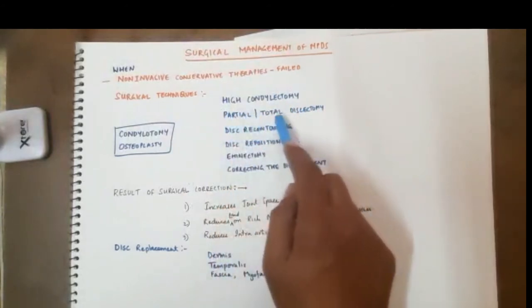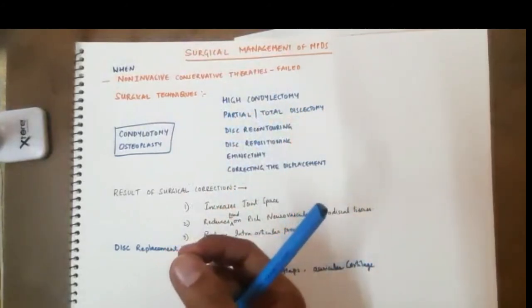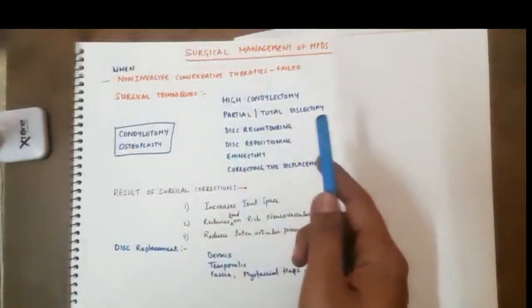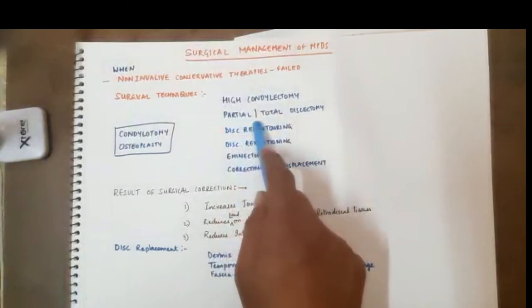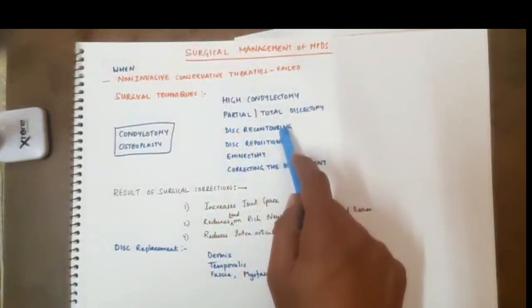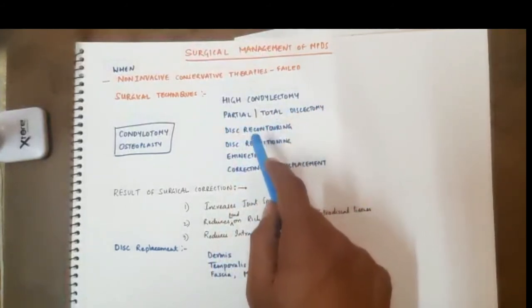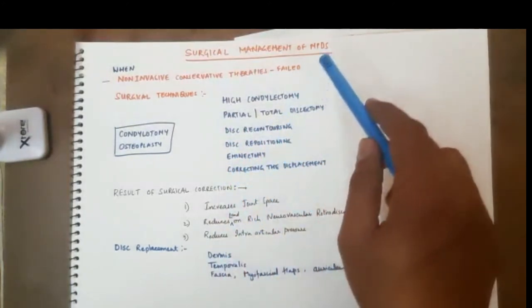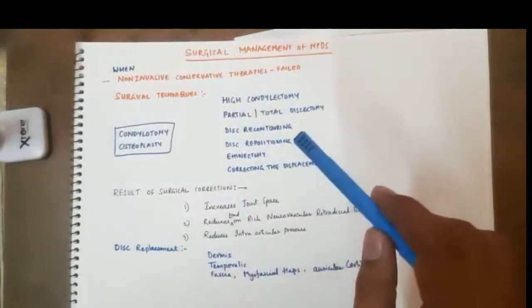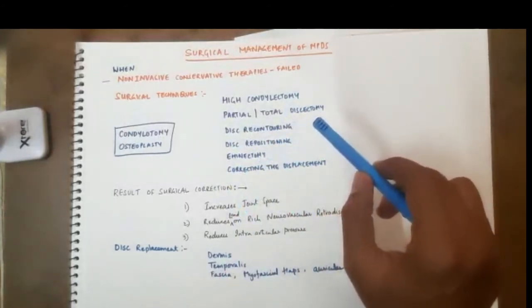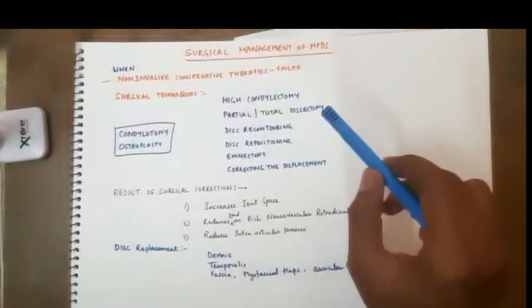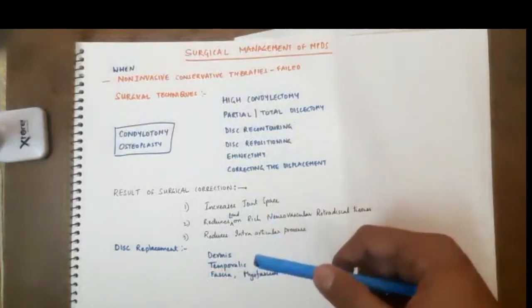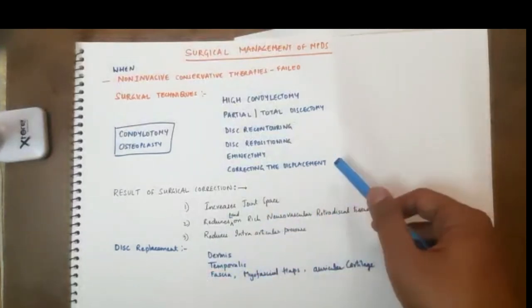The other surgical procedure is discectomy. The disc that is coming forward and giving click sounds, going backwards, getting stuck there. So in that condition you can always do partial or total discectomy. Then the disc recontouring, disc repositioning, eminectomy, and correcting the displacement of the condyle. All these things can be surgically tried. But to do it surgically you need an oral and maxillofacial surgeon and definitely a thorough examination, getting into the diagnosis part thoroughly, one to ten times we cross check things, and then do the surgery.